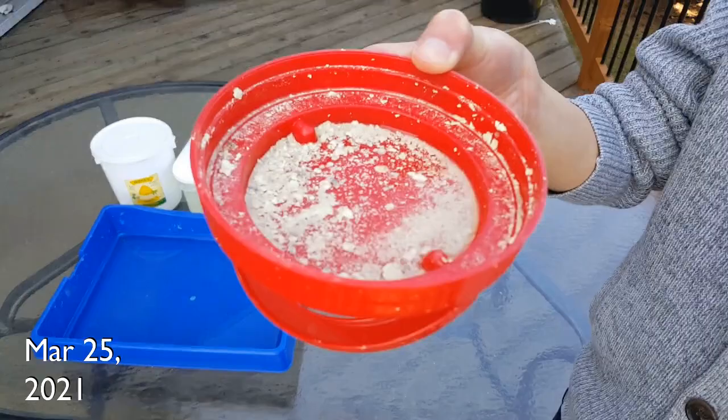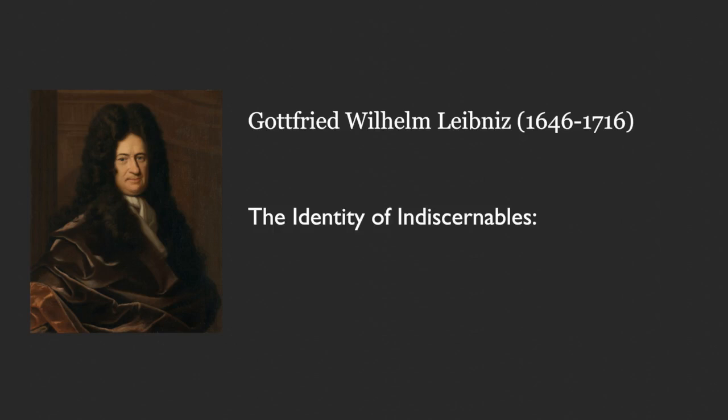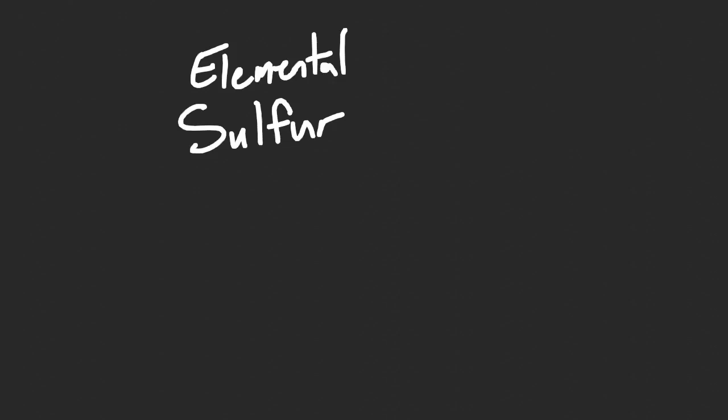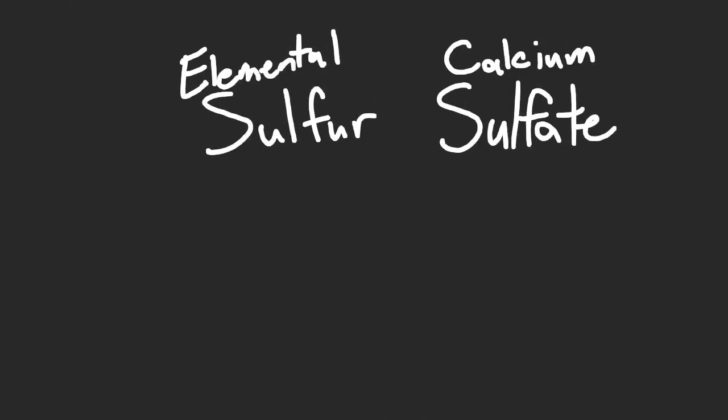At least the scrapings dried after a few days, so now I had some material I could begin tests on. When trying to figure out what substance you have, we can employ Leibniz's Identity of Indiscernibles as a guide: two objects with all properties in common are the same object. So my strategy was to try to find out what properties my sample had and whether they were identical to the characteristics of some known thing. There were two compelling candidates: elemental sulfur, or a sulfur salt called calcium sulfate. The sulfur-y smell from hydrogen sulfide near the spring was consistent with the presence of either elemental sulfur or sulfate.